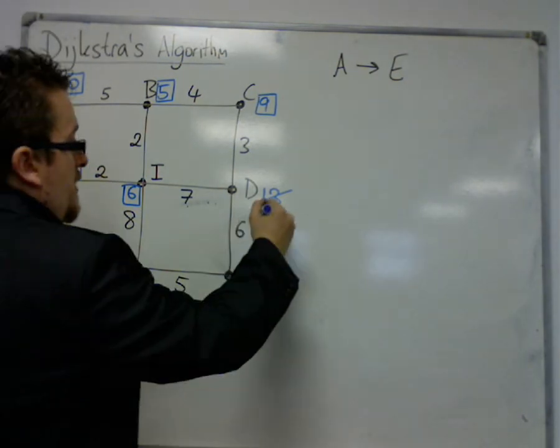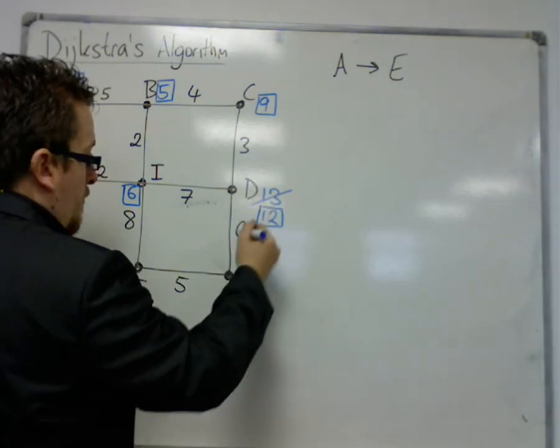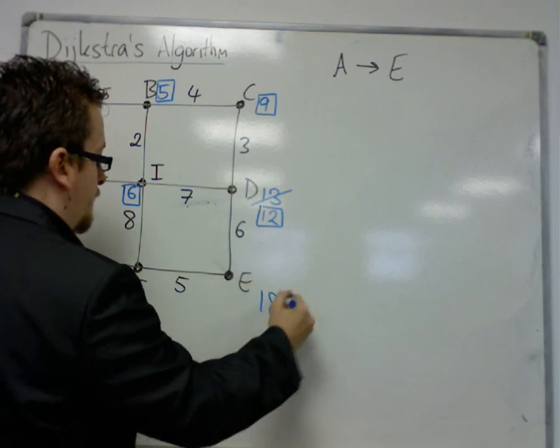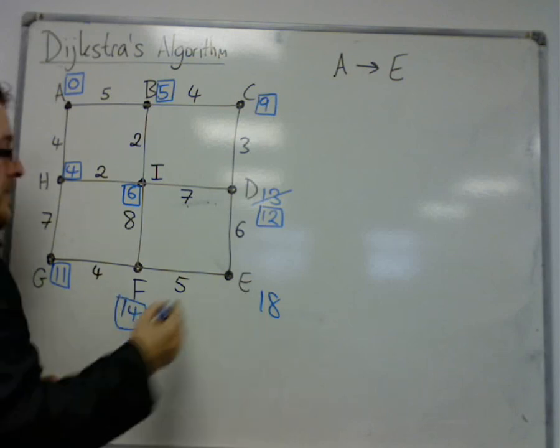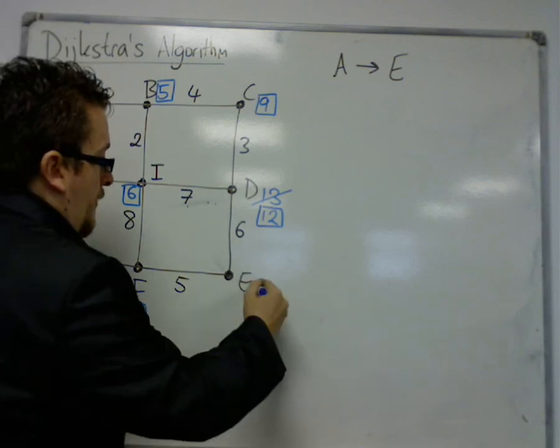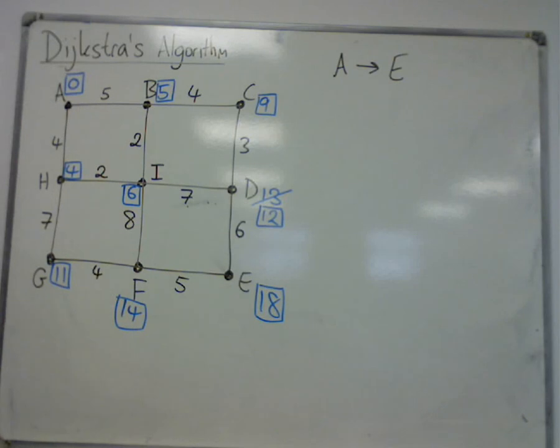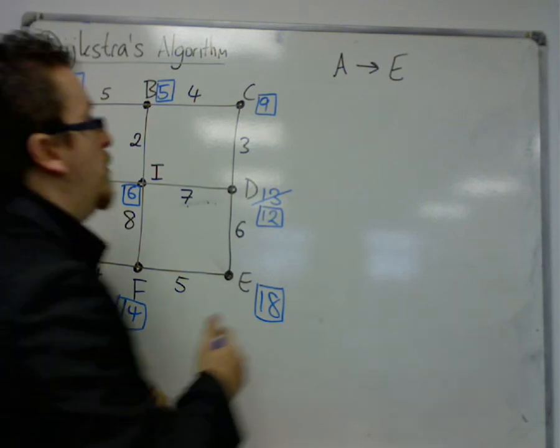The next least is the 12. 12 plus 6 is 18. Next least is 14. 14 and 5 isn't better than 18. So 18 is the last one, is the least. That's the one I write down.